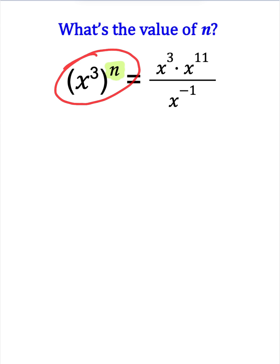So on the left side, I have a power being raised to another power. And what I do in that case is keep that base of x and multiply the exponents. So it becomes x to the 3 times n power, or just x to the 3n.